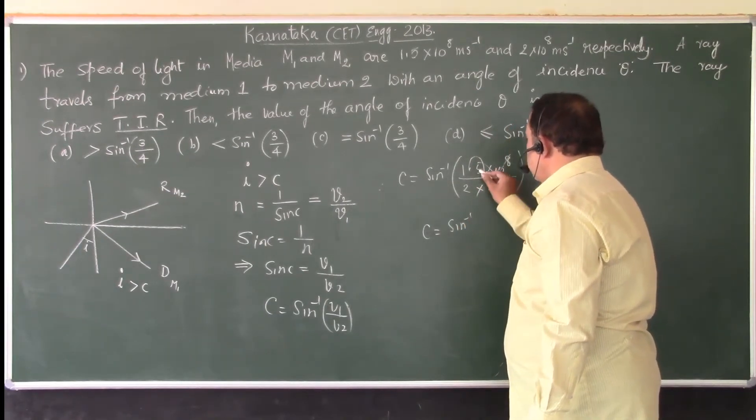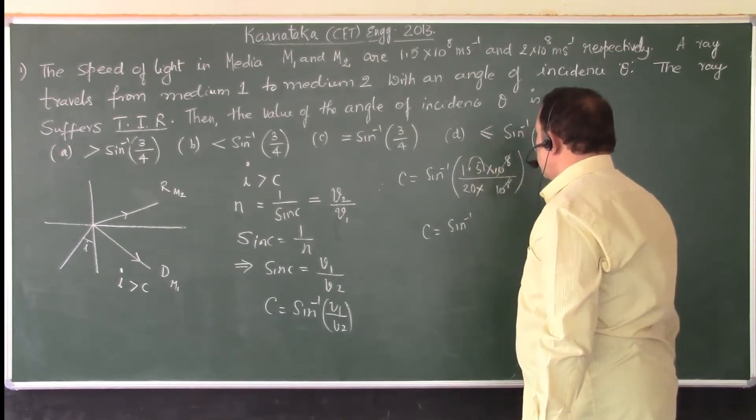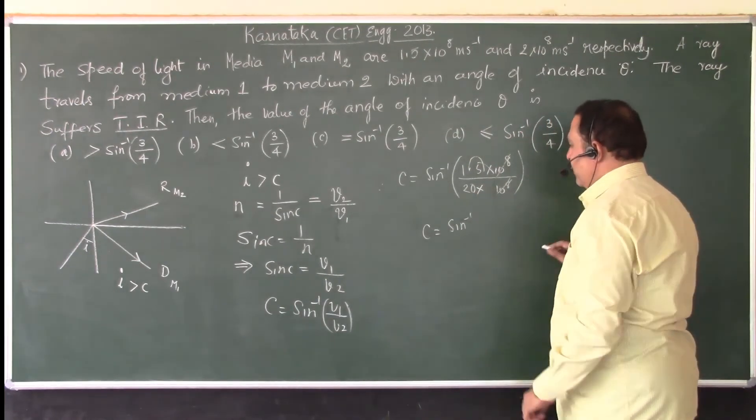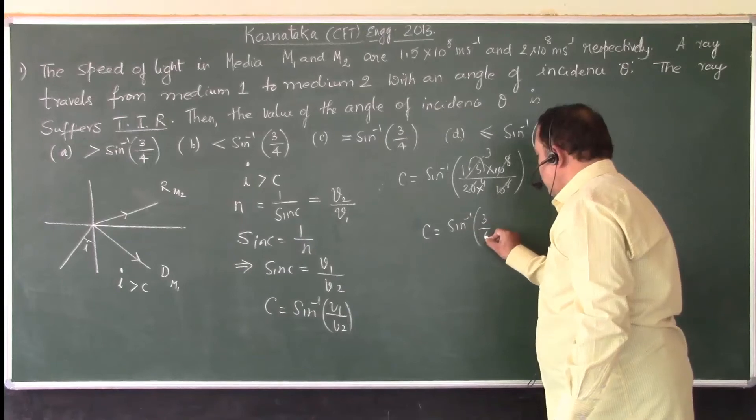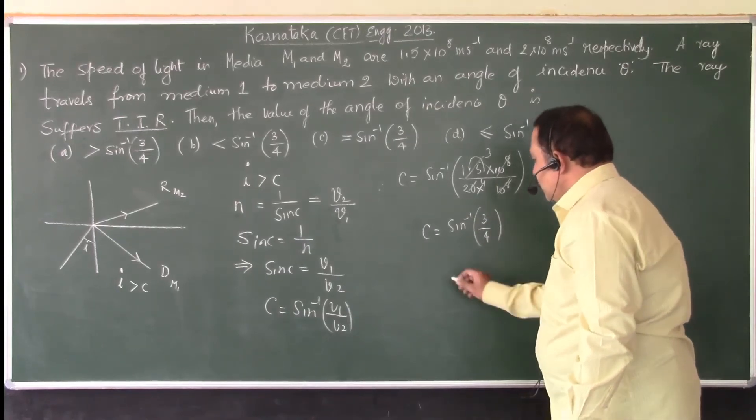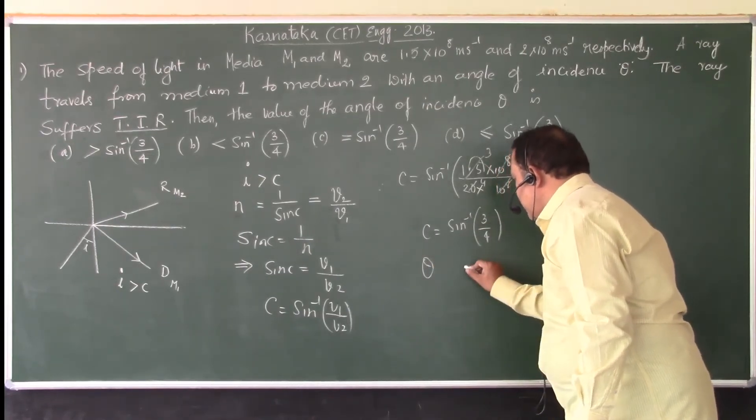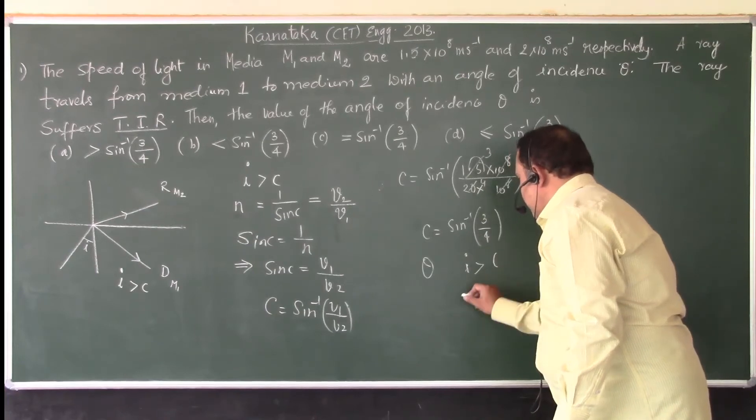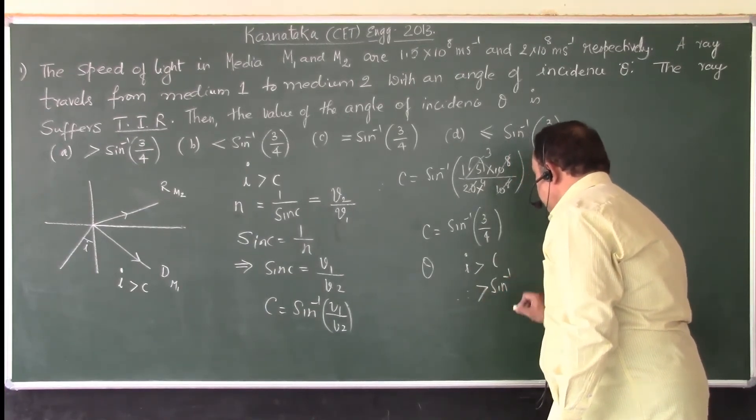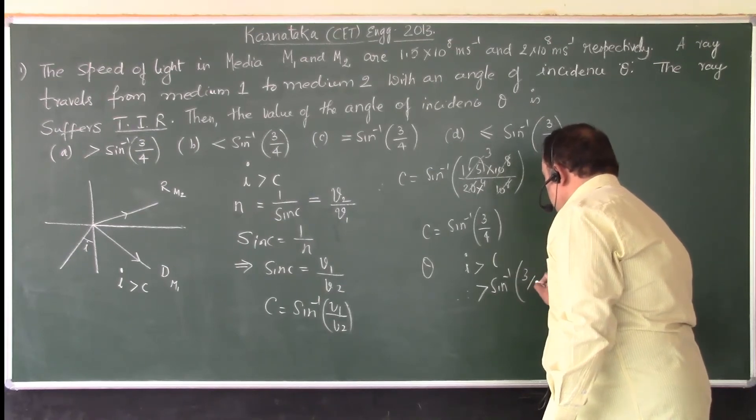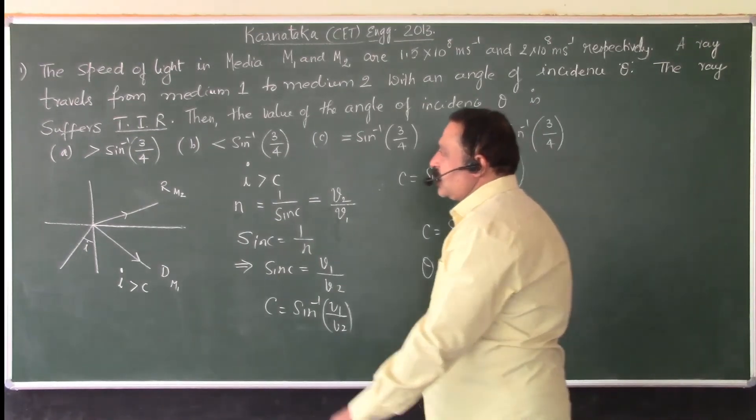So, here in the denominator, we have 20, 5 times 3, 5 times 4, so sin inverse of 3 by 4. Now, if theta is the angle of incidence, then I should be greater than C. Therefore, clearly, this answer is that theta should be greater than sin inverse of 3 by 4, which is the first option.